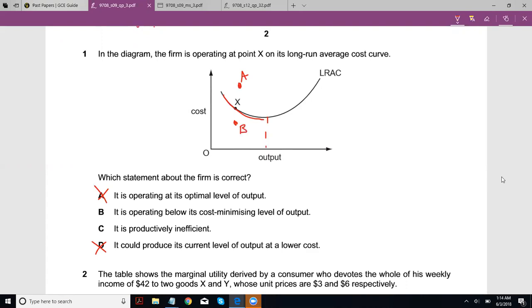However, you just cannot produce the same output at a lower cost with this current LRAC curve, right? So, A and D were easy to eliminate.